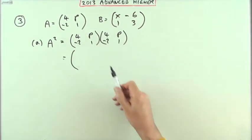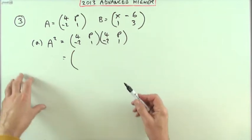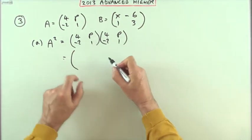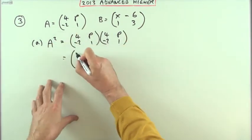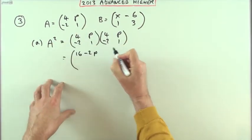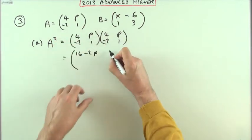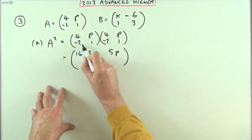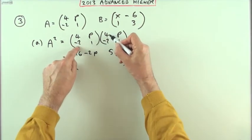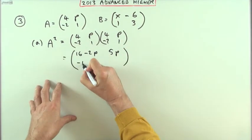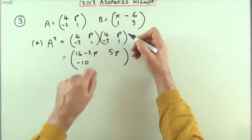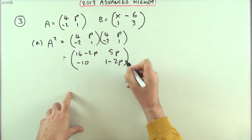The process for the multiplication of matrices is the scalar product of the row times the column. So then what we have is 16 minus 2p for the first entry, 4p plus p which is 5p for that entry. That's the first row complete. Now using the second row: negative 8 take away 2 is negative 10, and negative 2p plus 1 will be 1 minus 2p.